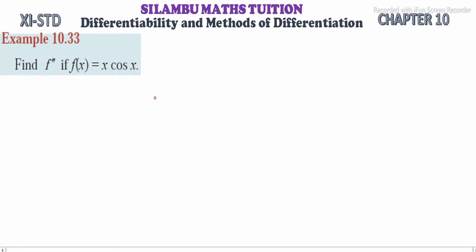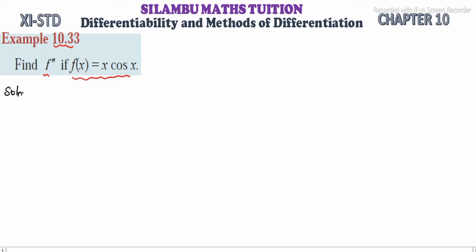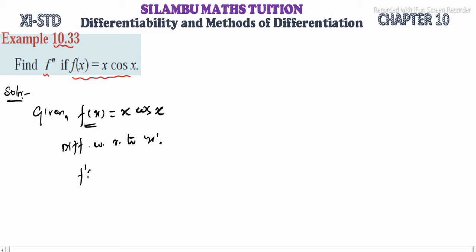Hi students, this is Silambo Max Tuition, 11th standard Example 10.33. Find f double dash (f''(x)) if f(x) is equal to x into cos x. So f(x) = x·cos x. We need to differentiate this function two times. First, differentiating with respect to x, so d/dx of f(x) equals d/dx of x·cos x.